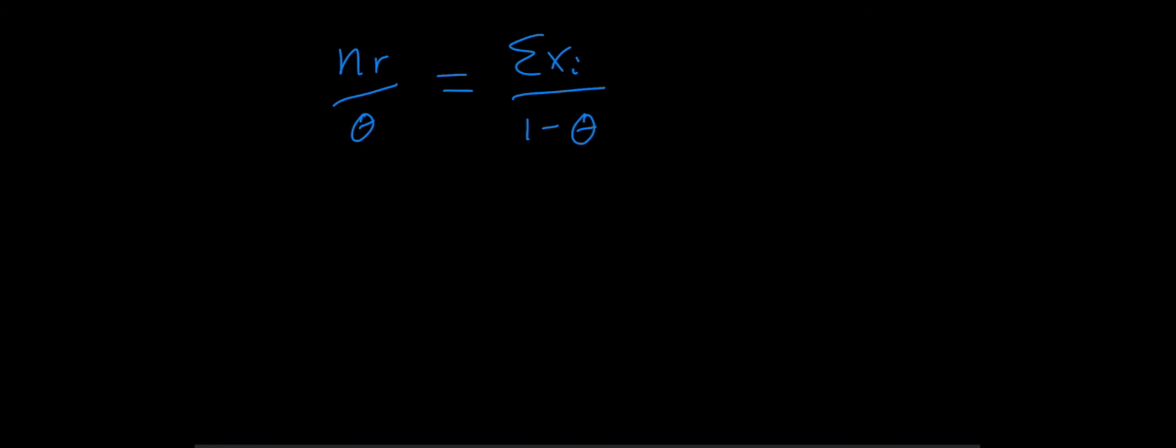Then, if we divide both sides by n, so this goes away, and the sum of the x i over n, well, that's just the mean of the data. So this becomes x bar here.